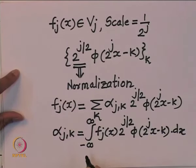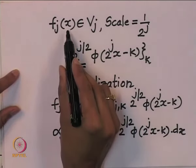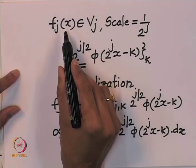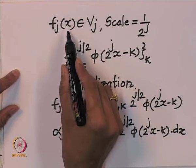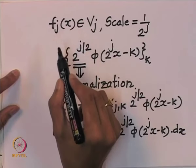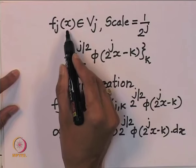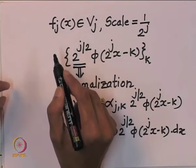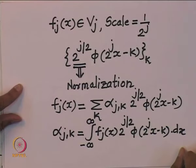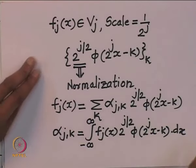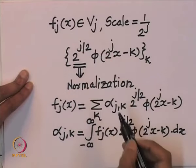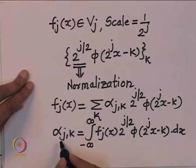We can write f_j(x) as a summation over k: alpha_{z,k} * 2^(z/2) * phi(2^z * x - k). We have purposely taken the function as a function of x to make it more generic. This is how we can span V_j subspaces and find out the approximation values, which are the alpha values.